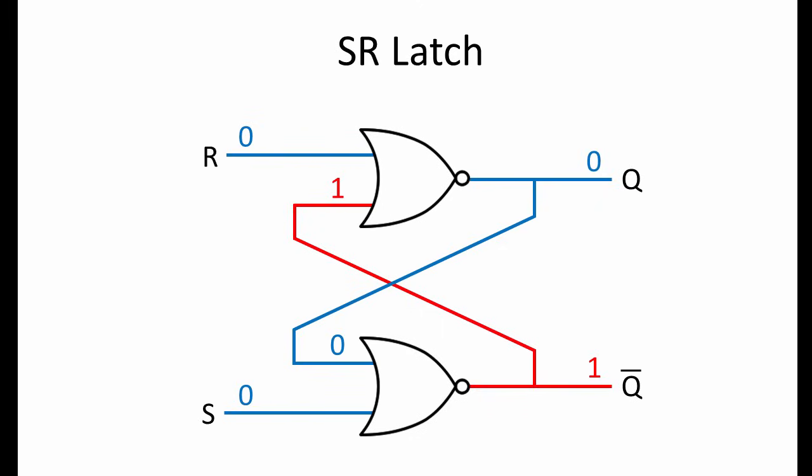In order to store a 1 again, a pulse must be applied to input S, which will set the latch. Again, notice how the various changes are propagated around the circuit. The set pulse is then removed, and the circuit is now latched into a set state. It's storing a 1 again.